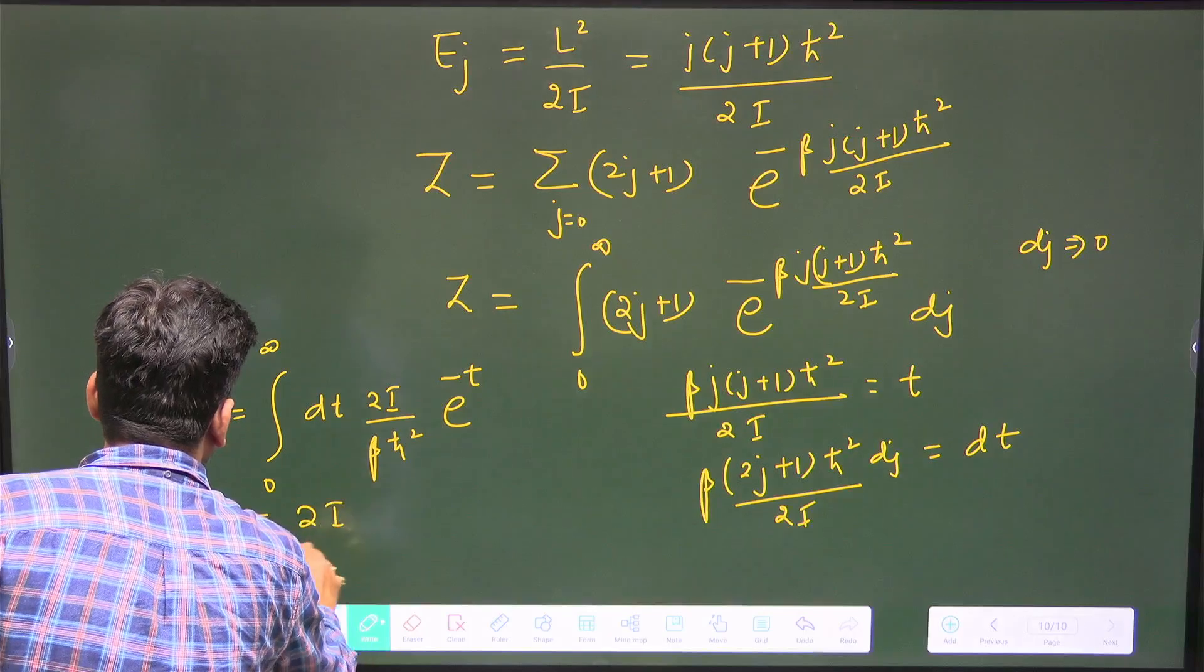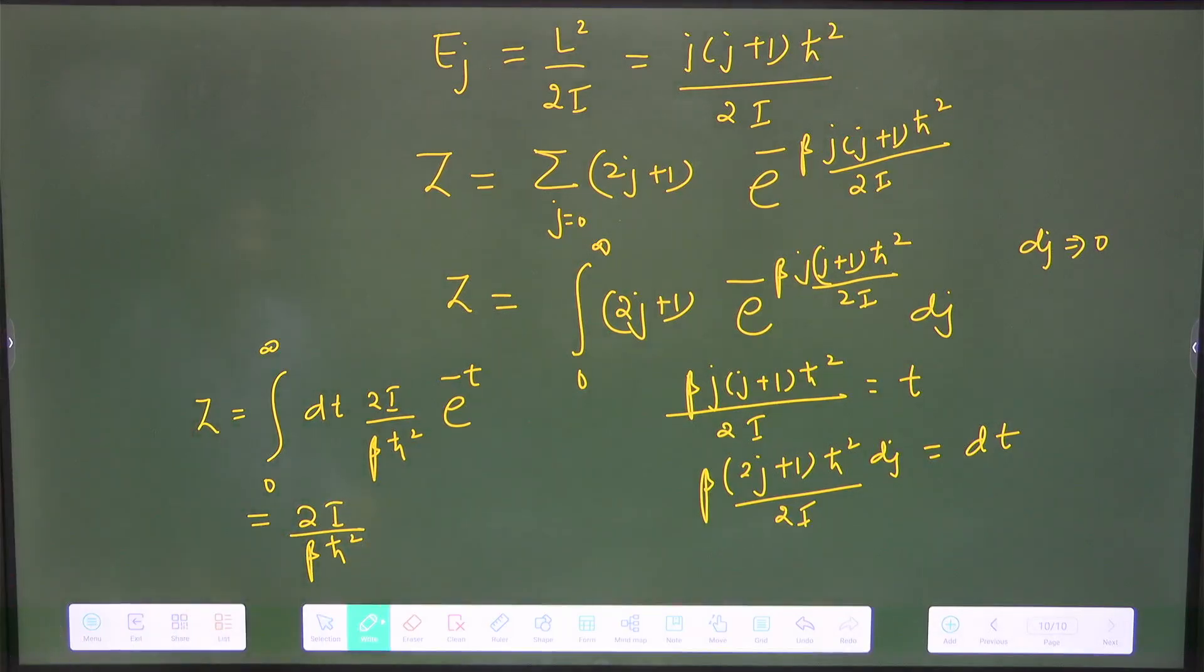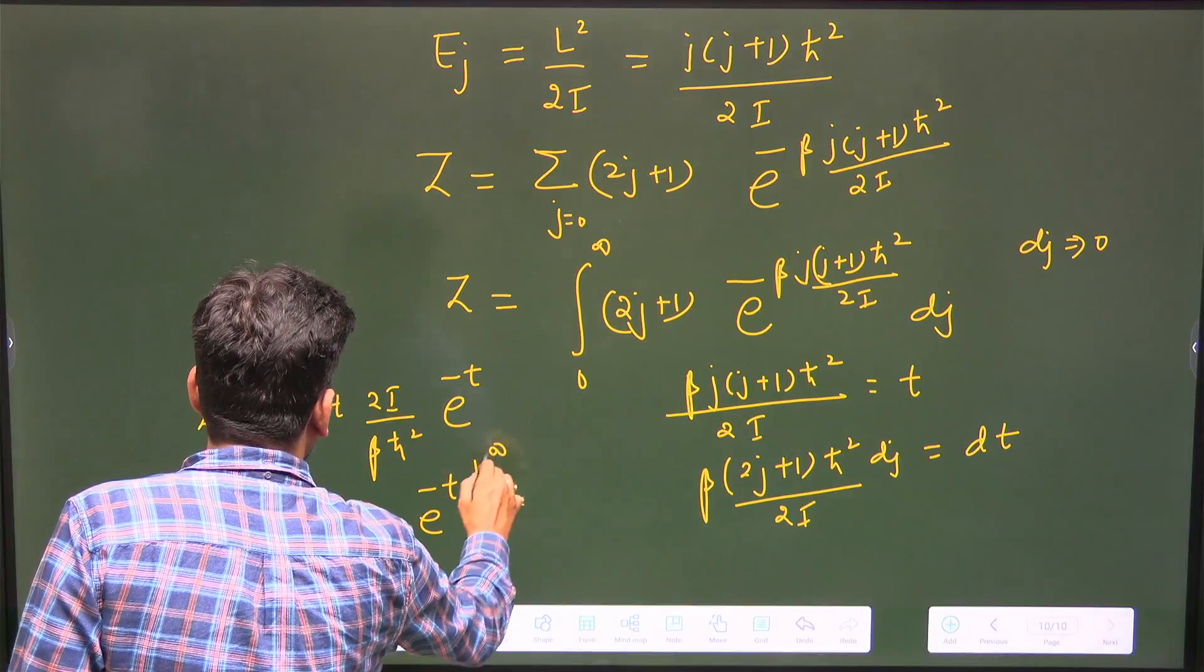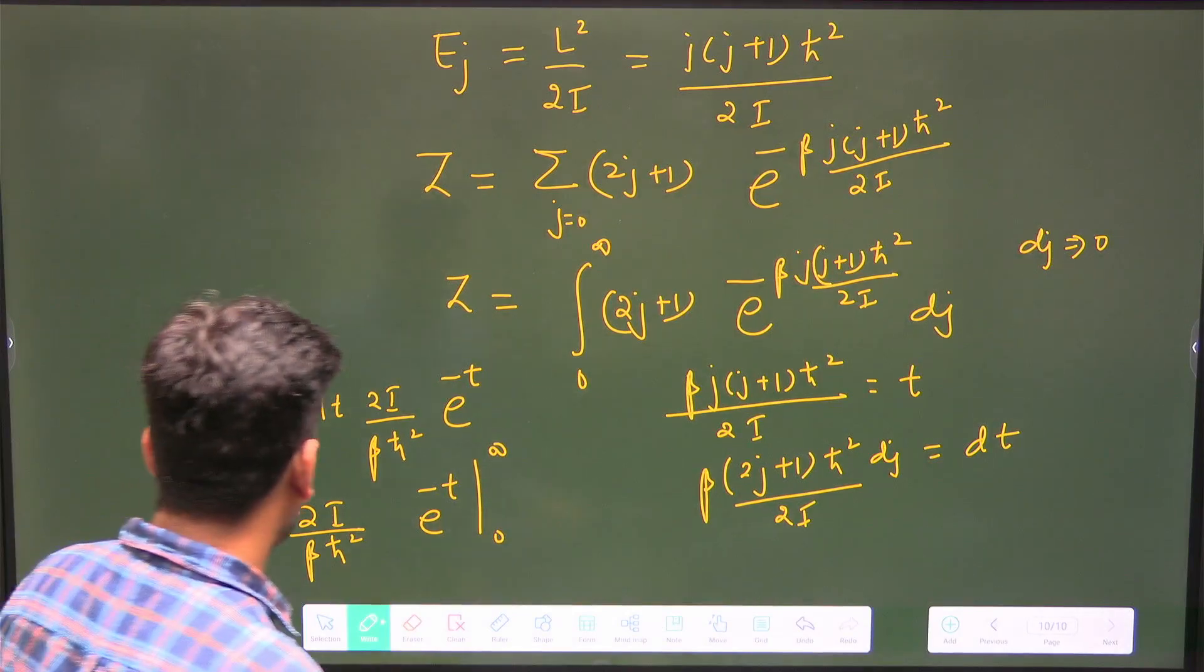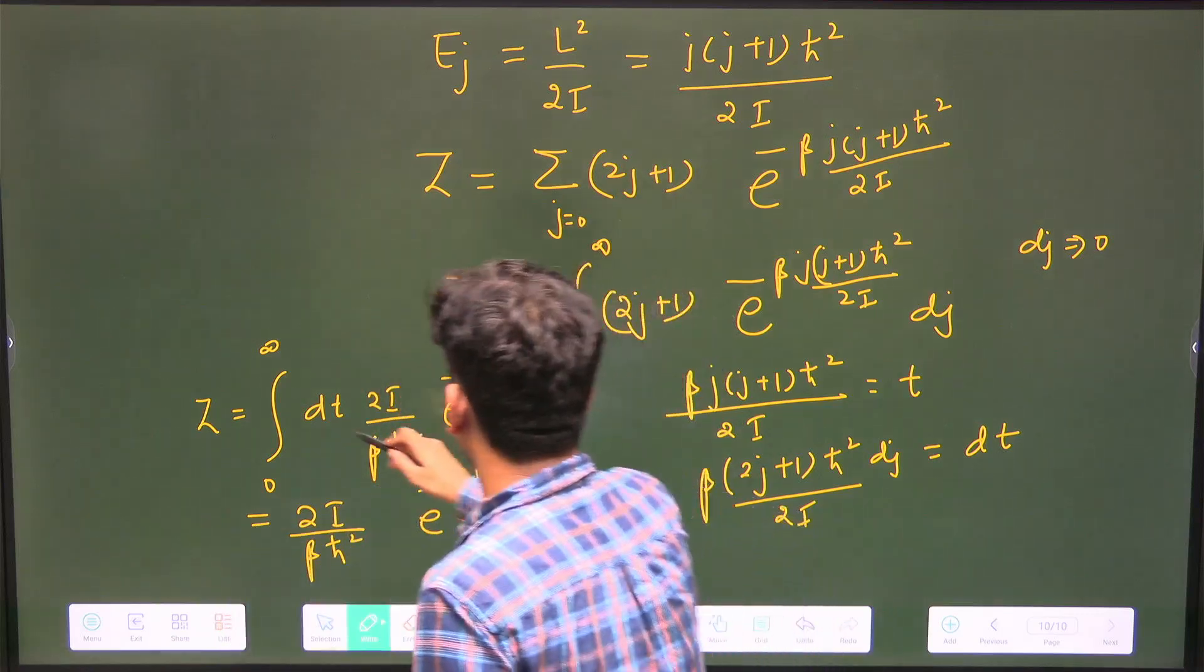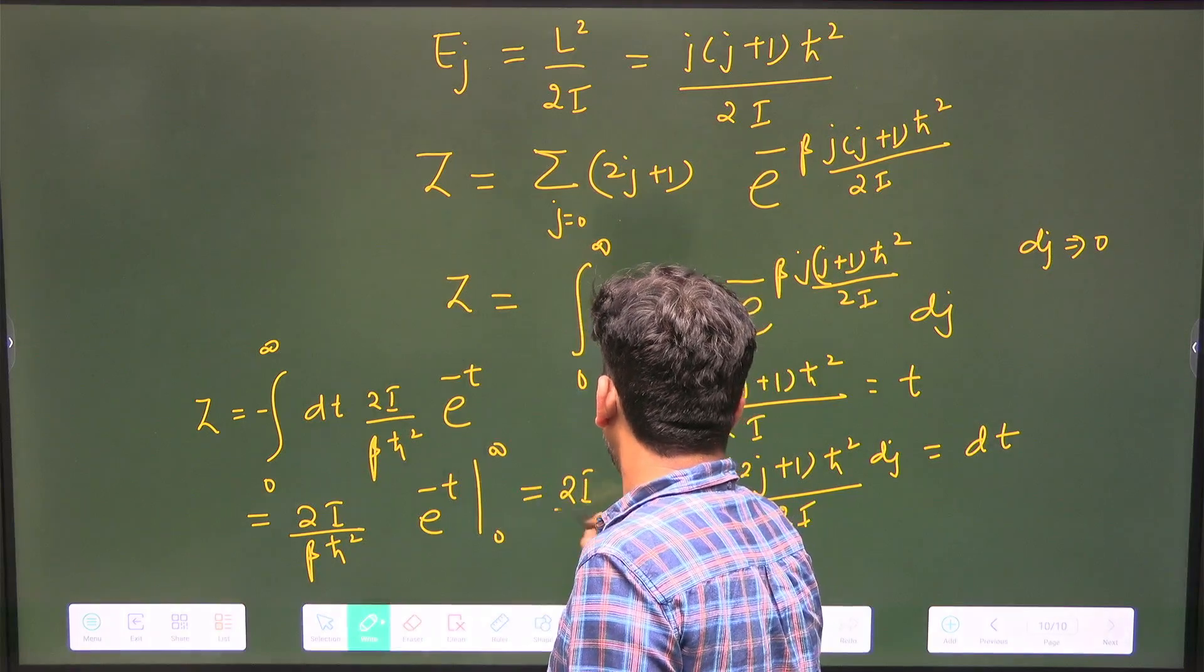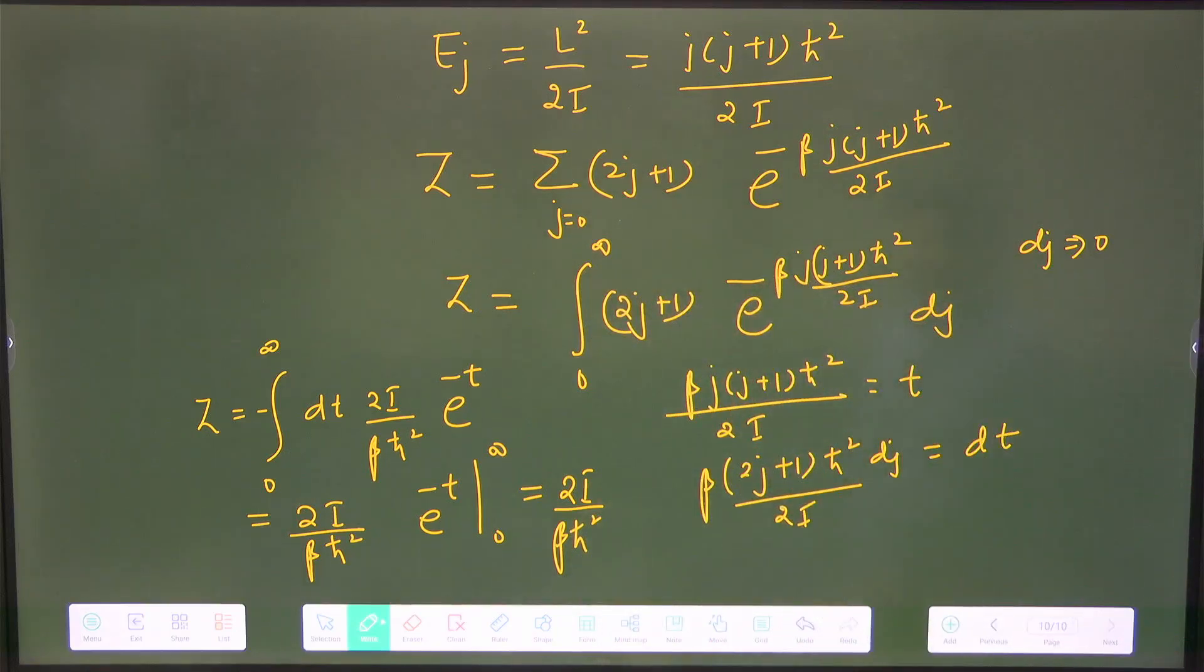This becomes 2I/(βℏ²) times the integral of e^(-t) from 0 to infinity. With the minus sign, this evaluates to 1, giving Z = 2I/(βℏ²).